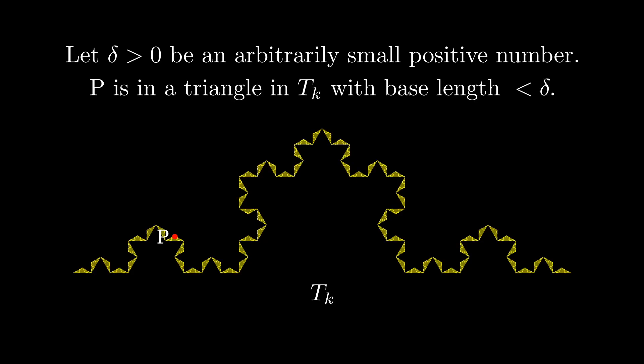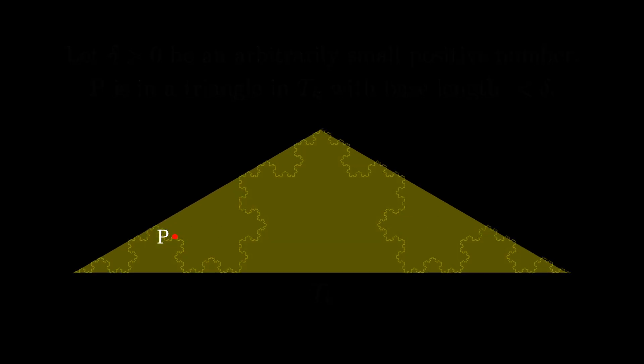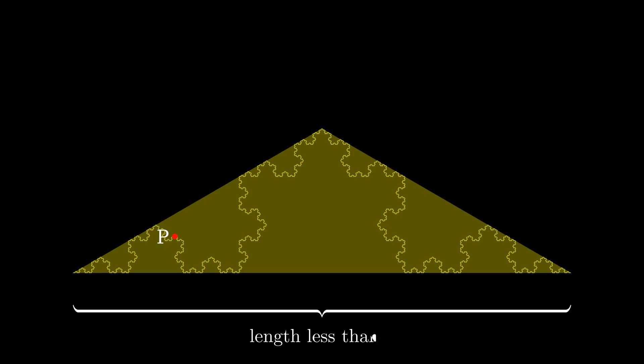Now suppose P is a point on the Koch curve. Let delta be an arbitrarily small positive number. Then there is a sufficiently large K such that P is in one of the isosceles triangles from the set TK for which the length of the base of the triangle is less than delta. Let's zoom into this particular triangle that contains the point P. We will consider three cases about the location of point P in this triangle.